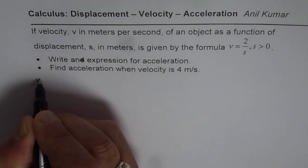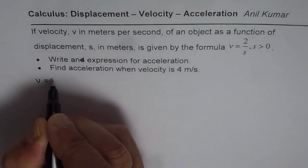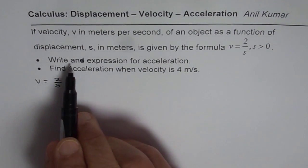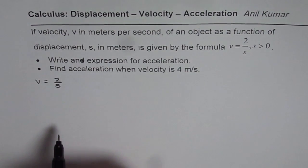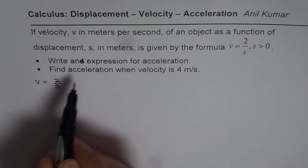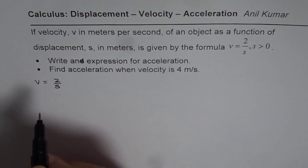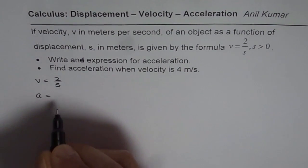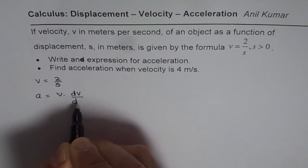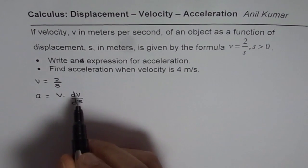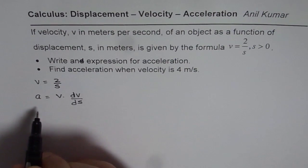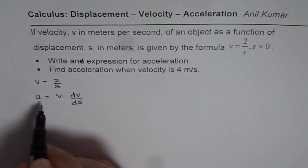We are given velocity equals 2 over s, and we need to find an expression for acceleration. Now, velocity is a function of displacement; s is displacement in meters. Then acceleration, as you know, is velocity times dv/ds — the rate of change of velocity with reference to displacement. So let us find what dv/ds is first.